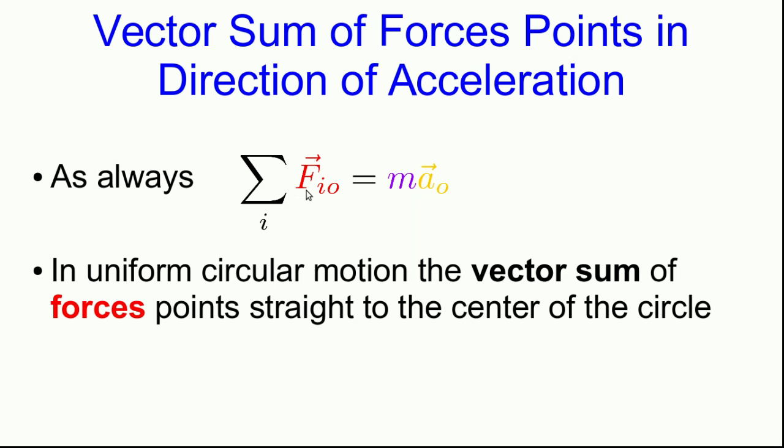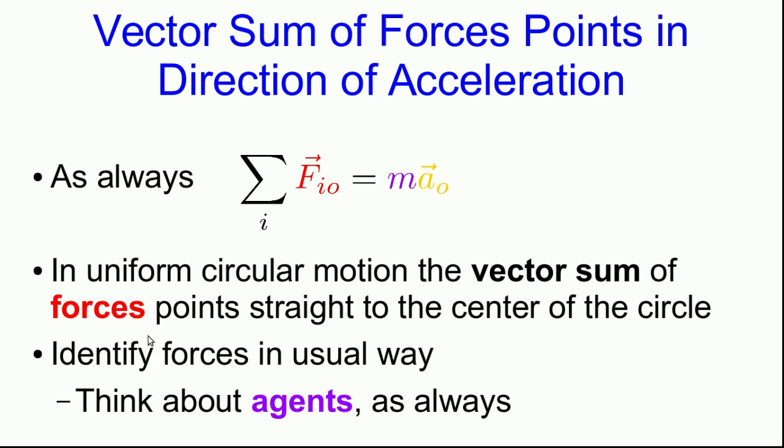Notice there's no new special force that comes up because an object is going in a circle. We still have to identify forces in the usual way. Think about all the agents that can exert forces on the object that we're thinking about. What we know now, though, is that the vector sum of the forces has to be to the center of the circle in uniform circular motion.